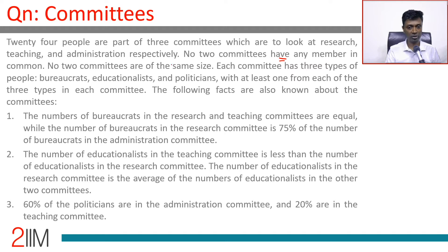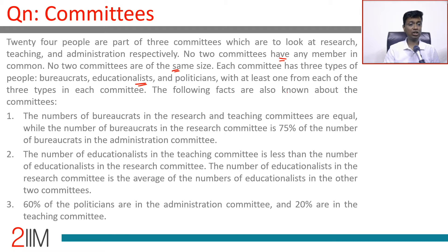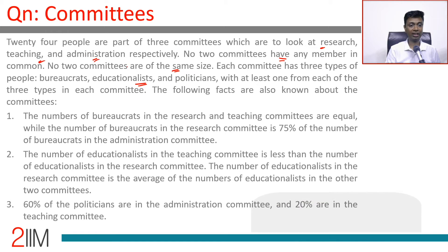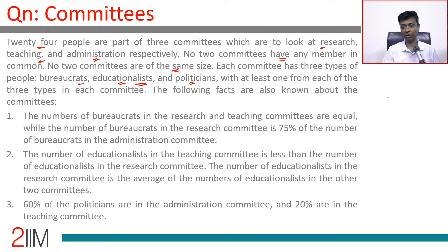No two committees are the same size — this also helps. Each committee has three types of people: bureaucrats, educationalists and politicians, with at least one from each of the three types in each committee. So no committee is empty. Each committee should have at least one bureaucrat, at least one educationalist, at least one politician — each committee should have at least three people. 24 to start with and no intersections.